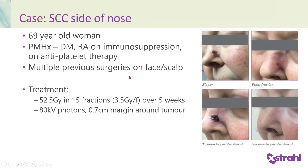This case was a 69-year-old lady with a squamous cell carcinoma on the side of the nose. She had diabetes, rheumatoid arthritis, was on immunosuppression and antiplatelet therapy, and therefore surgery was not the best treatment. She had also had multiple previous surgeries on her face and scalp and didn't want further surgery. She was treated with 52.5 Gy in 15 fractions over five weeks with 80 kV photons. On the final fraction there was some radiation dermatitis and scabbing, which was drying up two weeks after treatment, but already by a month after treatment the skin was looking very intact.